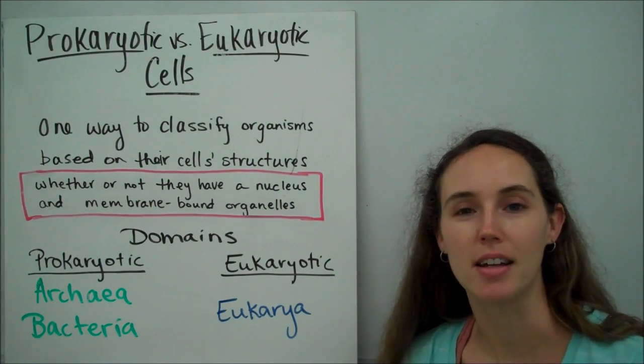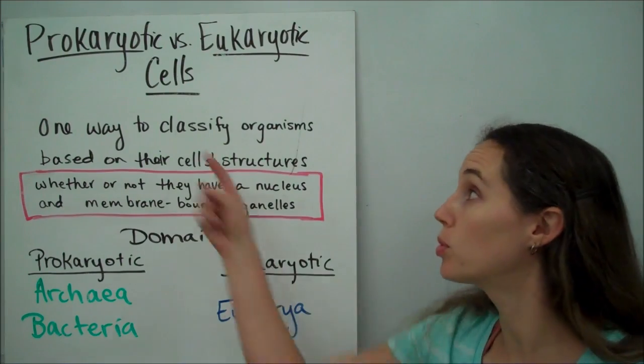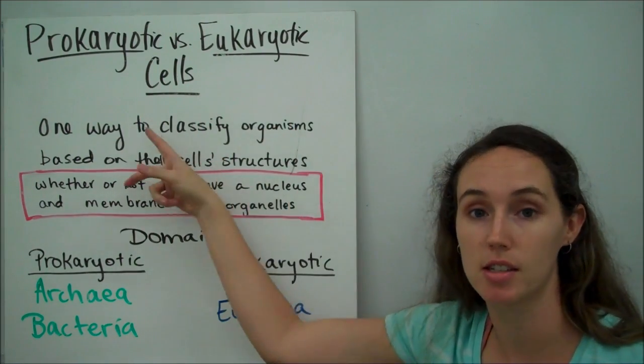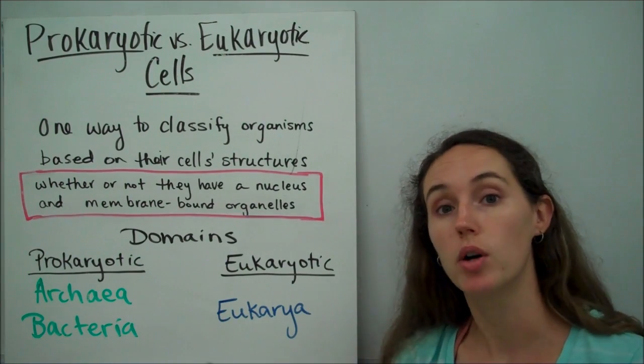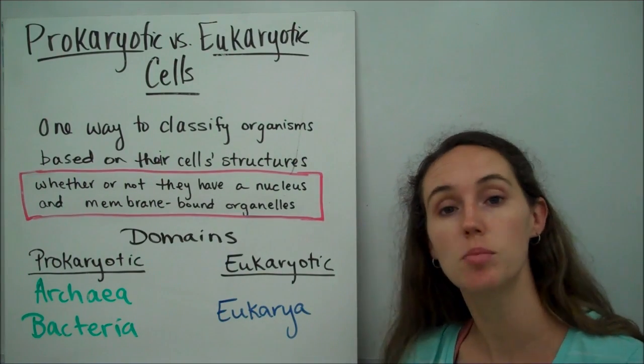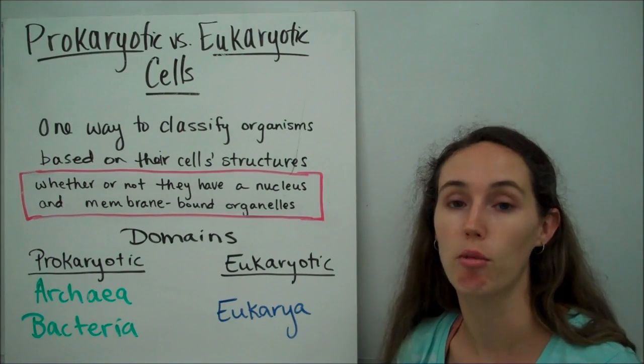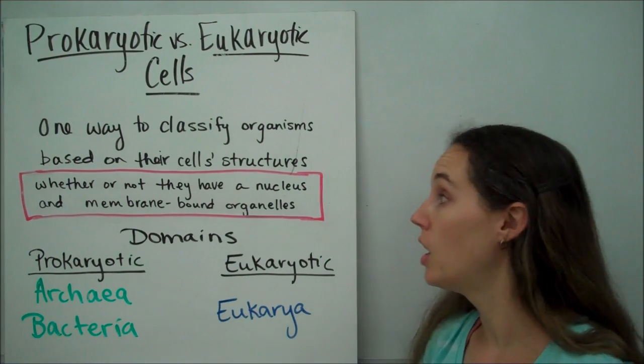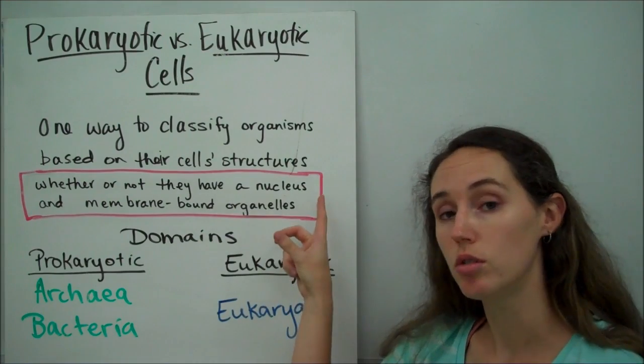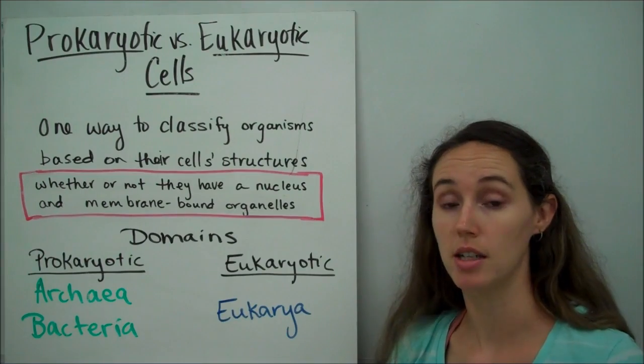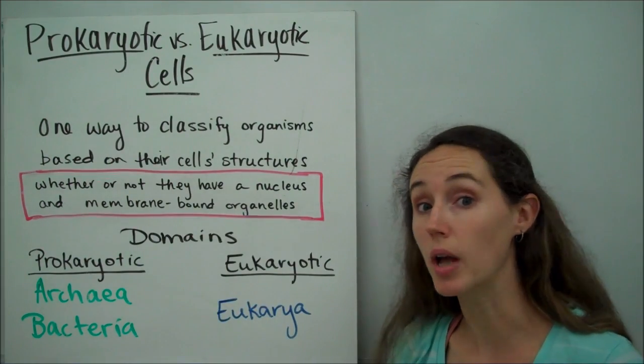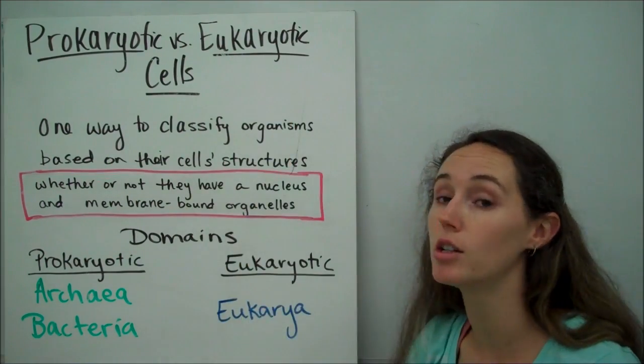Hi, today's podcast is about the difference between prokaryotic and eukaryotic cells. Differentiating between organisms as prokaryotic or eukaryotic is simply based on the structures that they have within their cells. Primarily, whether or not they have a nucleus and membrane-bound organelles. The simplest way to see it, prokaryotes do not have these structures, whereas eukaryotes do.